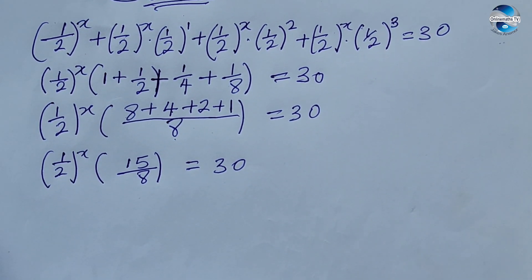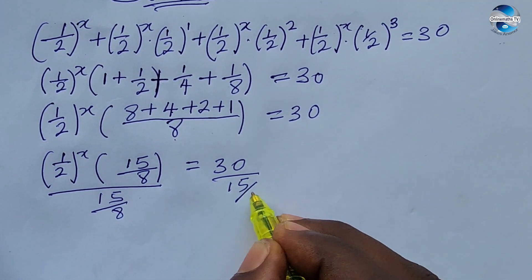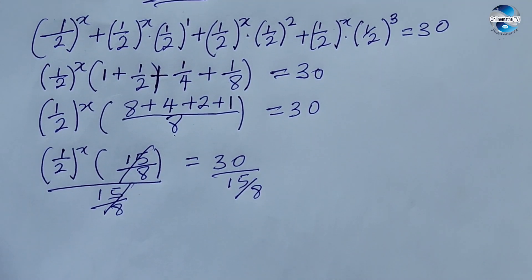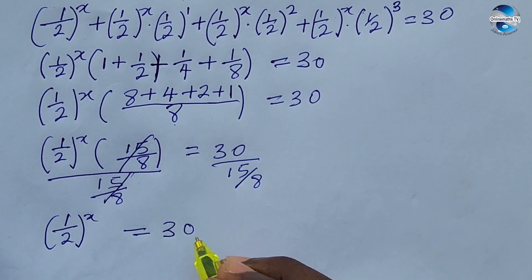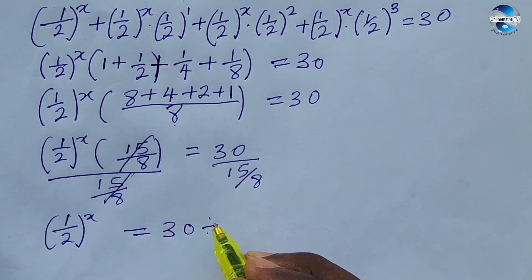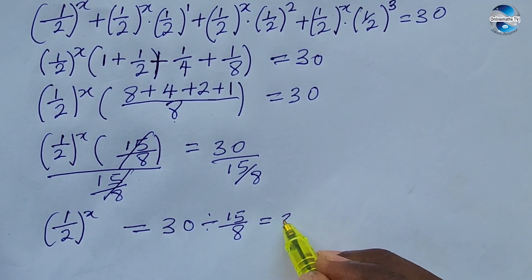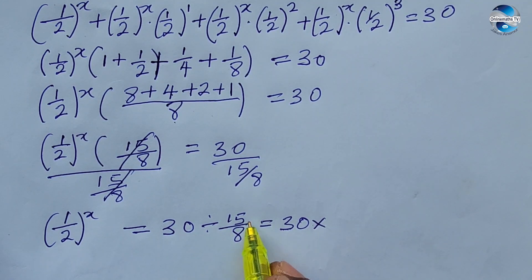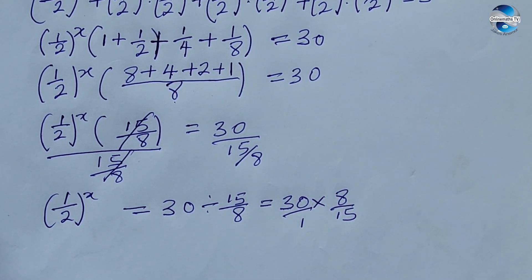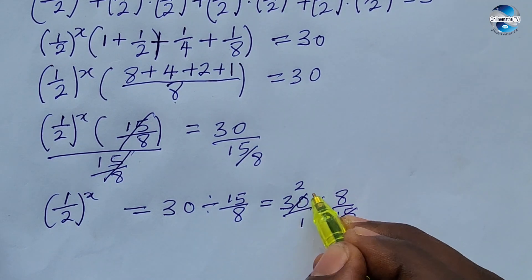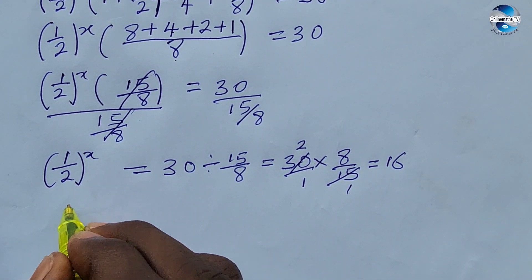Now let's divide both sides by 15/8. Dividing 30 by 15/8: we change this to multiplication, so 30 times 8/15. We simplify — 30 divided by 15 gives 2, and 2 times 8 gives 16. So we now have (1/2)^x = 16.